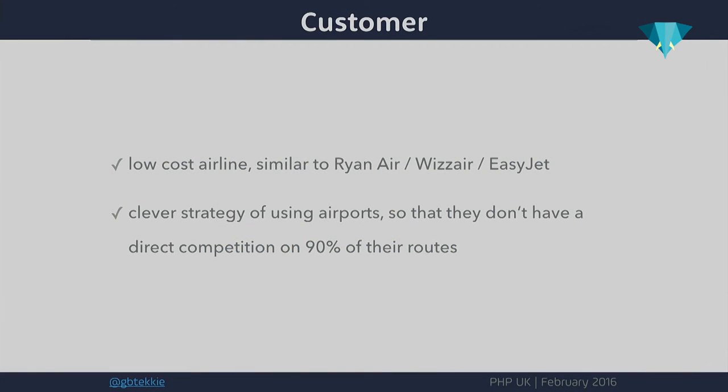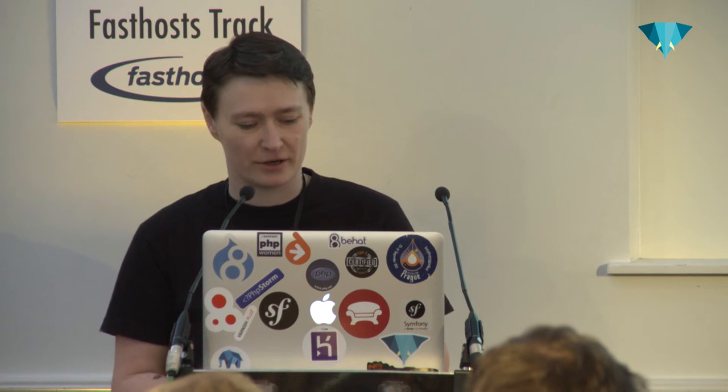They have a record streak of more than 44 consecutive profitable quarters, which is a very impressive thing for a company. Their strategy is to connect touristic destinations with underserved cities, therefore creating a market. Instead of cannibalizing from the existing market, they bring new customers in and fly them to touristic destinations. So they don't even have competition on more than 90% of the routes they are serving.